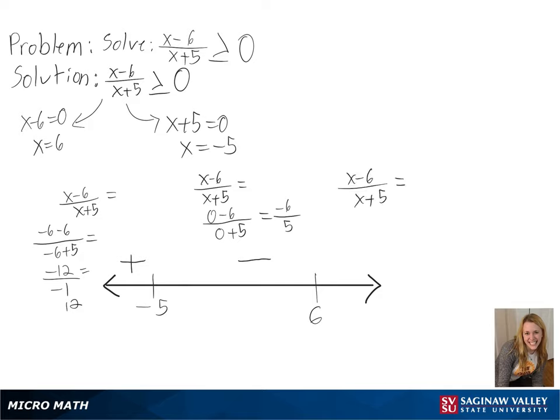Finally, we can use 7 as our number greater than 6. And plugging it in, we get a positive over a positive or a positive number.